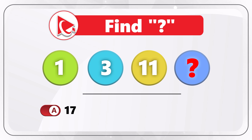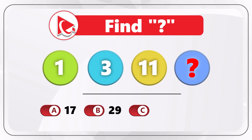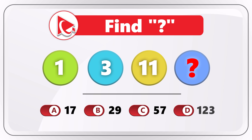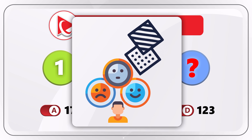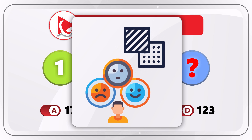Choice A: 17. Choice B: 29. Choice C: 57. And last but not least, Choice D: 123. I would recommend you run this question through the most common patterns you have in your mind so you can get to the correct answer.